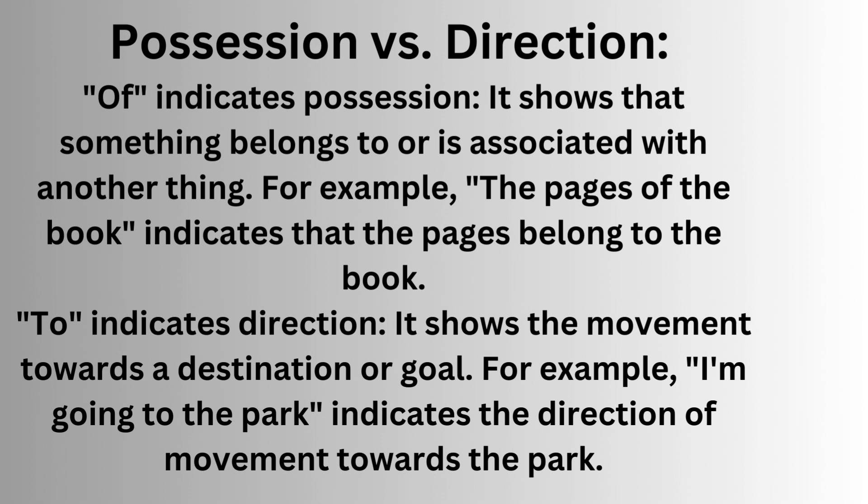Possession versus direction. 'Of' indicates possession — it shows that something belongs to or is associated with another thing. For example, 'the pages of the book' indicates that the pages belong to the book. 'To' indicates direction — it shows the movement towards a destination or goal. For example, 'I'm going to the park' indicates the direction of movement towards the park.